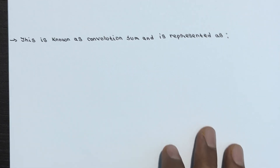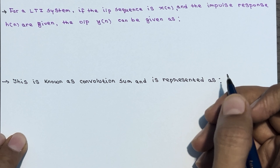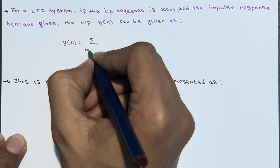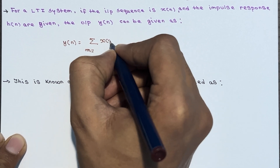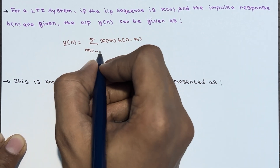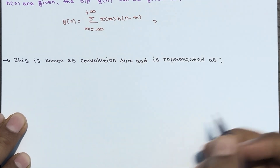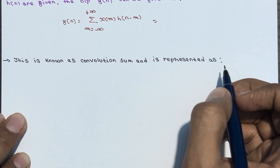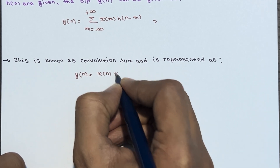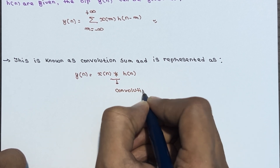For an LTI system, if the input sequence x(n) and the impulse response h(n) are given, the output y(n) is: y(n) = Σ x(m)·h(n−m), where m ranges from −∞ to +∞. This is known as the convolution sum, represented as y(n) = x(n) * h(n), where the star symbol denotes the convolution operation.